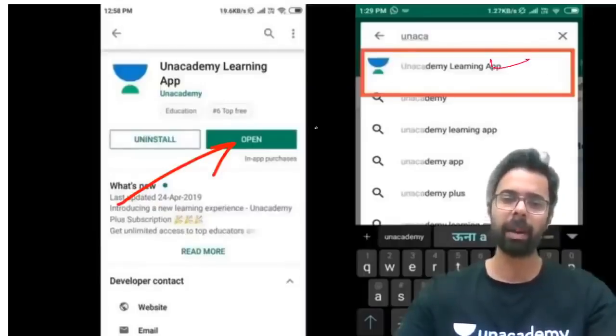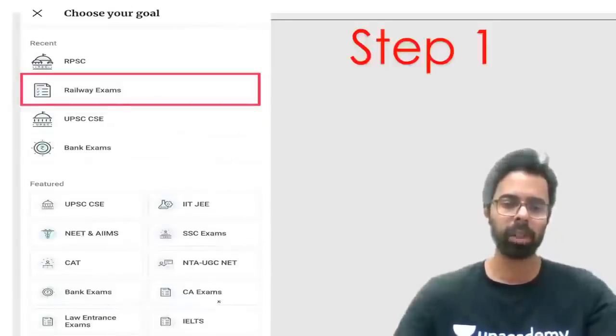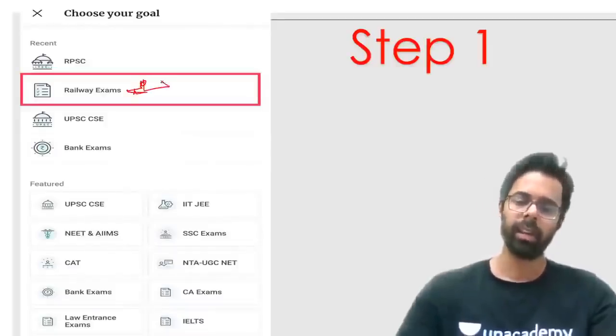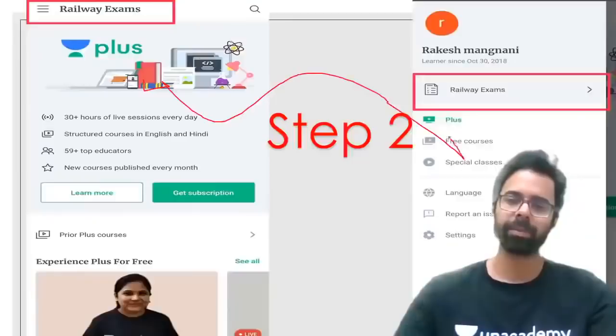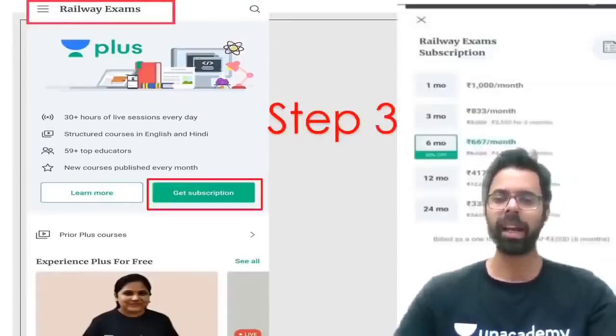If you talk about the Academy Learning App, you can download the app from Google Play Store. You can search for the app and select it, then you can click on it.